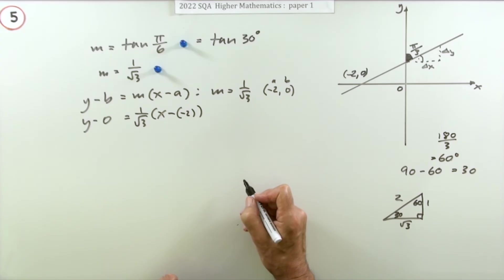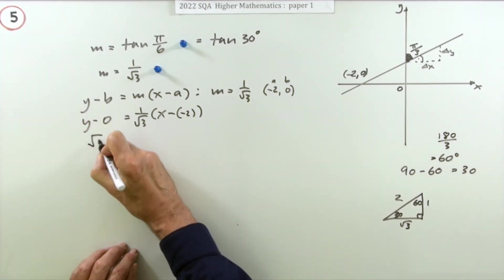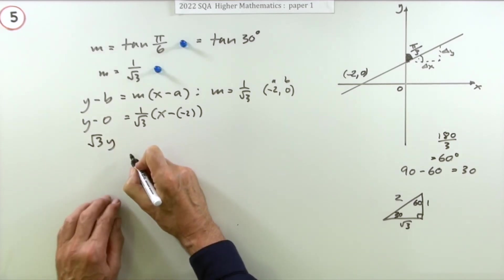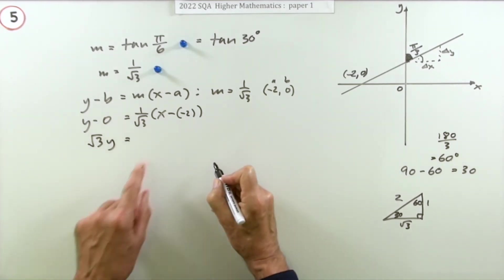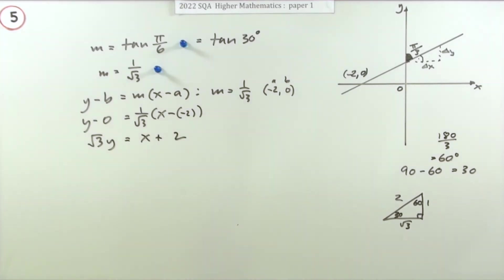Keep that inside a bracket there. Take that across and multiply, get rid of fractions: √3 y equals—that leaves just 1 times—that will just be x plus 2. That gets the final mark.